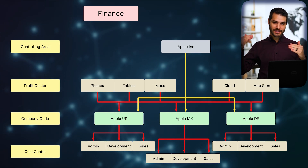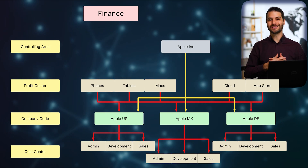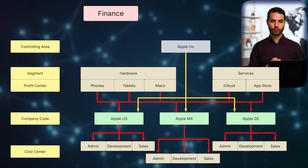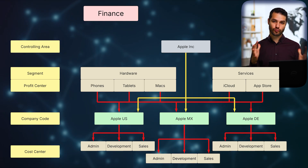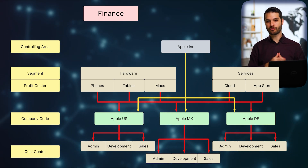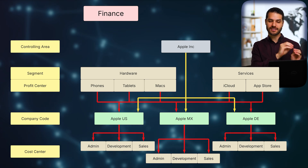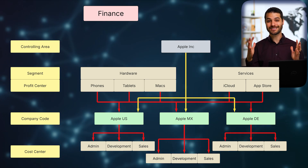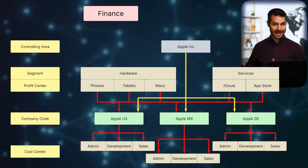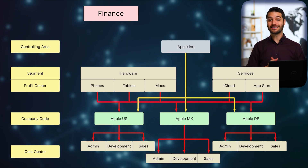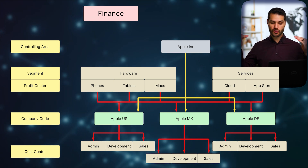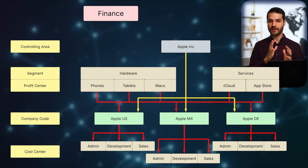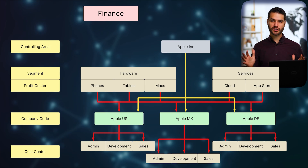Above profit centers, you have segments, which primarily serve to group and organize profit centers. In this example, the profit centers for phones, tablets, and Macs might all fall under a segment called 'Hardware,' while iCloud and the Apple Store fall under a segment called 'Services.' Those two segments consolidate all the profit center information and group them together.